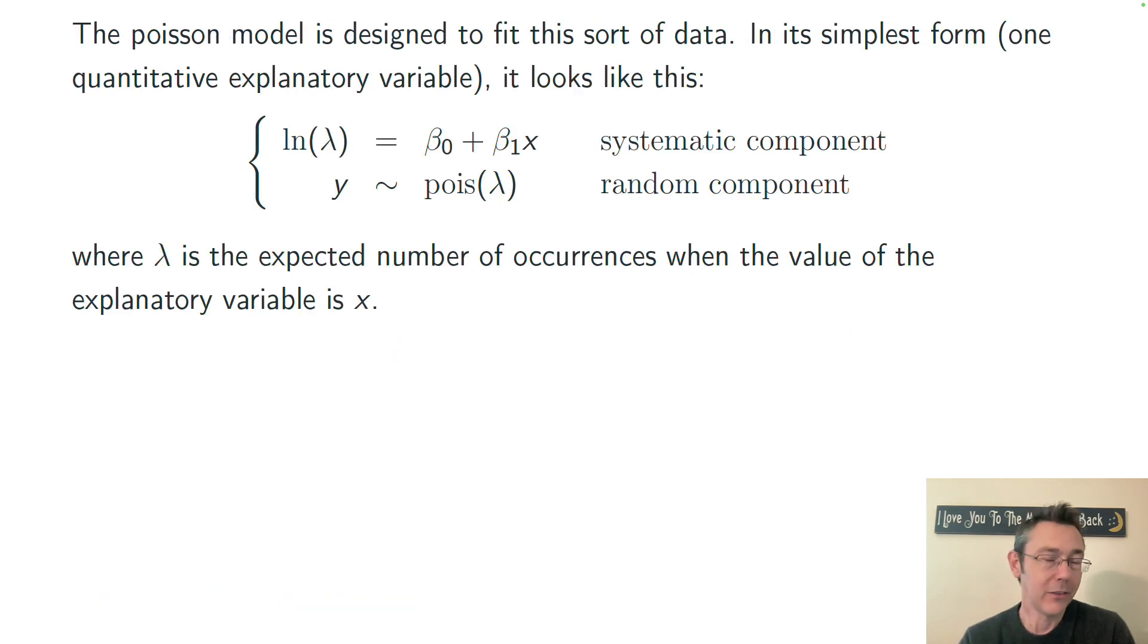The Poisson model is designed to fit data like this. The random component says that the response variable is going to have a Poisson distribution. So that's modeling counts, where lambda here is representing the expected number of occurrences. I have a whole video on the Poisson distribution. If you haven't seen that before, it's worth checking out, because the Poisson distribution is hugely important in statistical modeling. Counts come up all the time.